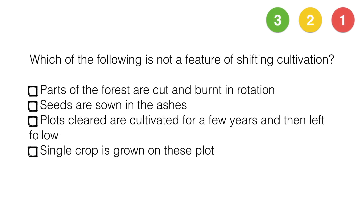Which of the following is not a feature of shifting cultivation? Parts of the forest are cut and burnt in rotation. Seeds are sown in ashes. Plots cleared are cultivated for a few years and then left fallow. Single crop is grown on these plots.